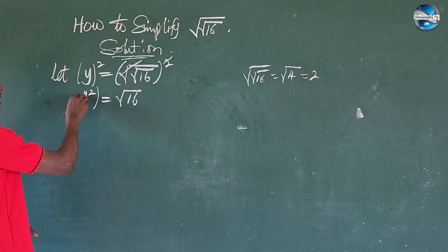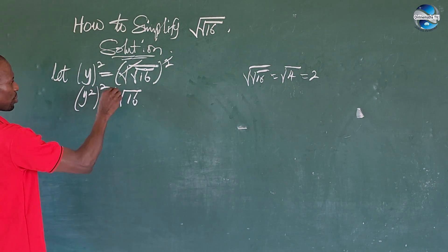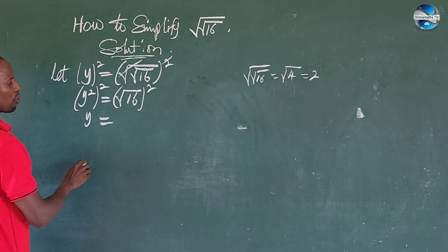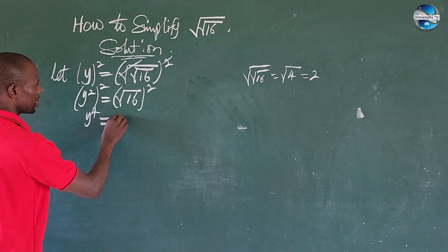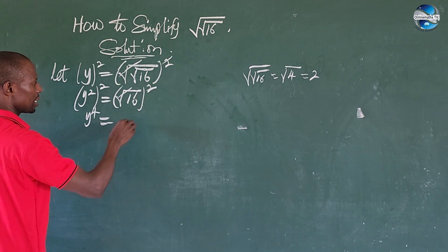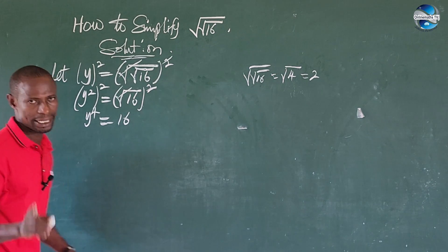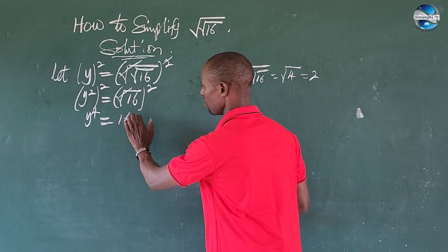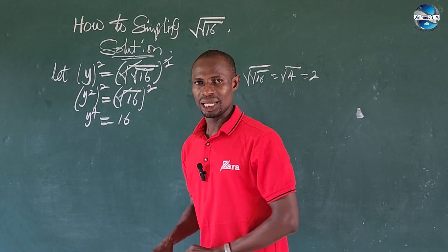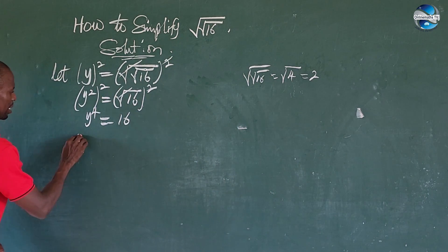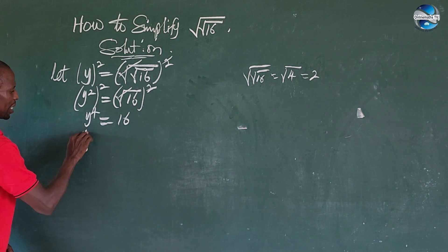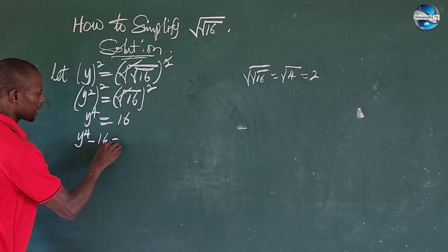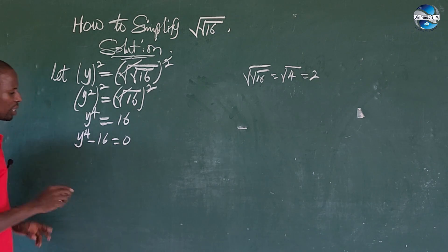Again, I take the square of both sides, so I now have y to the power of 4 is equal to 16. I move 16 to the left-hand side of the equation, and I end up with y to the power of 4 minus 16 is equal to zero.